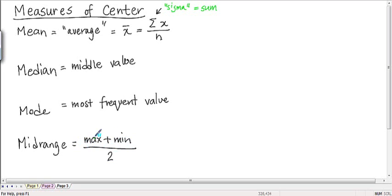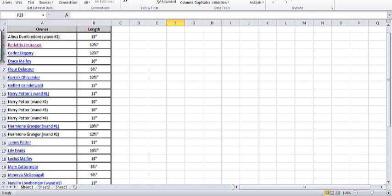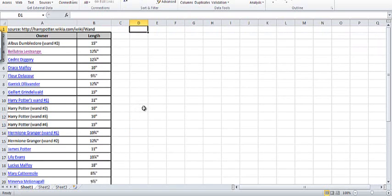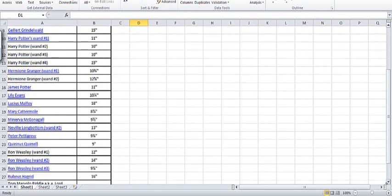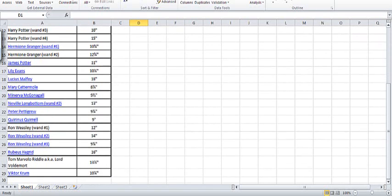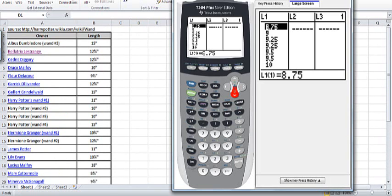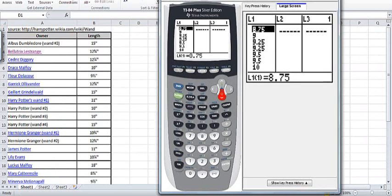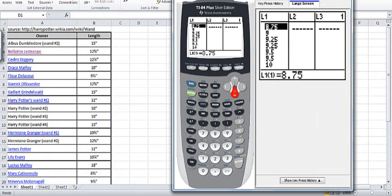So to show you how to do these on the calculator, I'm going to use the data that we looked at before in Chapter 2, which is this Harry Potter wand data. And I'll post this data online, so that way you can plug it into your calculator. I have already plugged the data into the calculator. Calculate the mean and median and so on for this data.